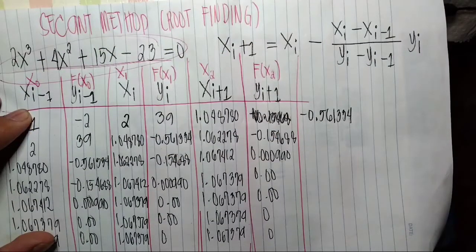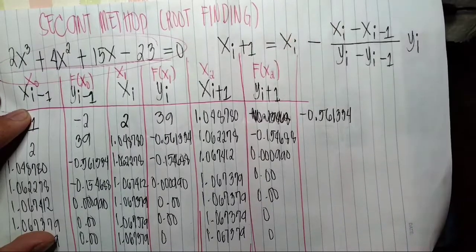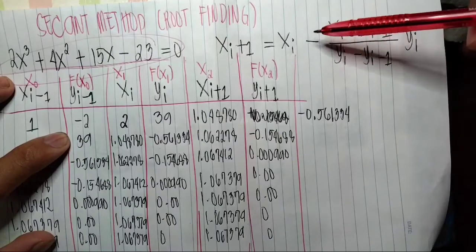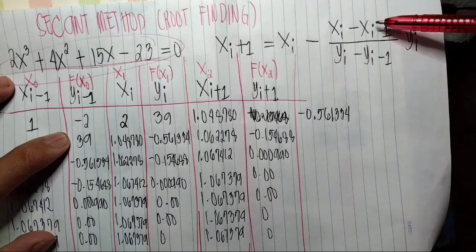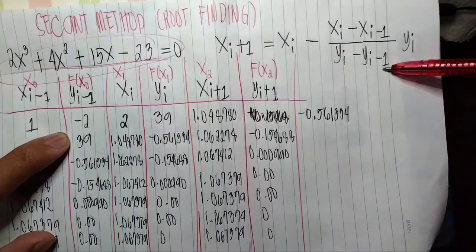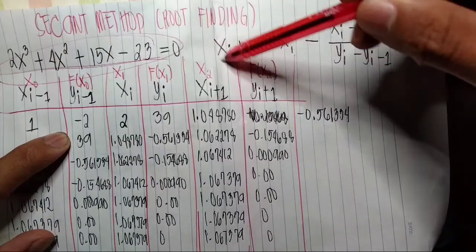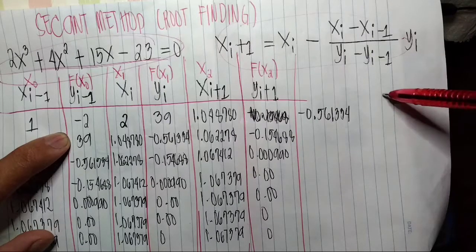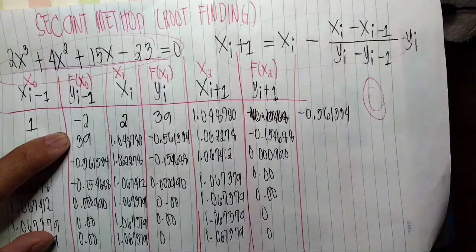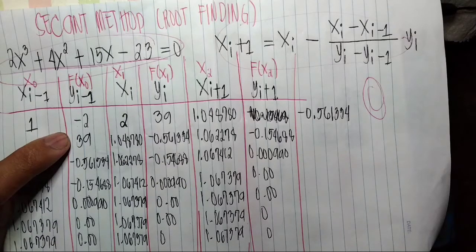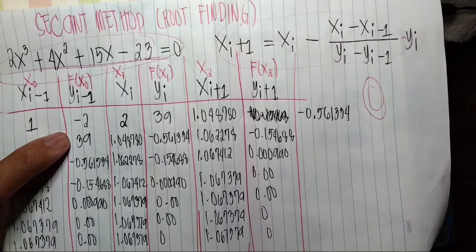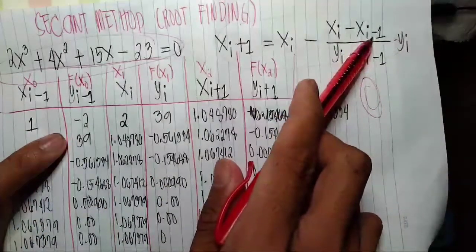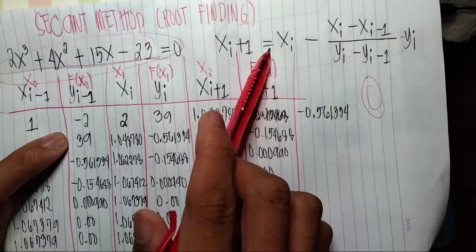So here we have the equation 2x cubed plus 4x squared plus 15x minus 23 equals zero, same as we did in Newton-Raphson method. In the secant method, the formula is x i plus 1 equals x i minus x i minus 1 over y i minus y i minus 1 times y i. So we'll use this for root finding.